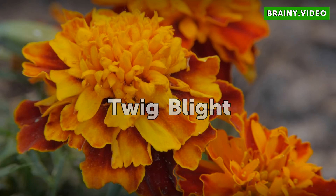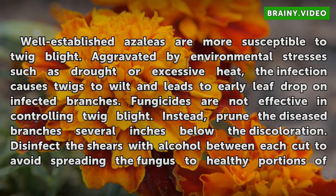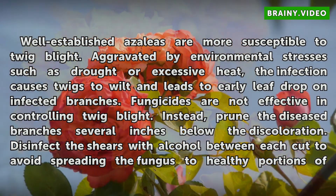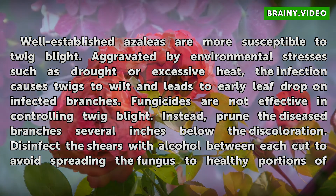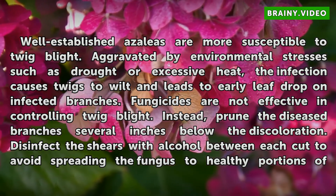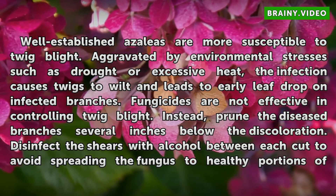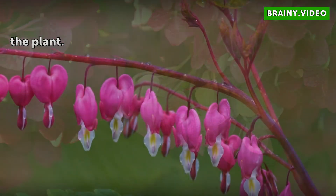Twig blight. Well-established azaleas are more susceptible to twig blight. Aggravated by environmental stresses such as drought or excessive heat, the infection causes twigs to wilt and leads to early leaf drop on infected branches. Fungicides are not effective in controlling twig blight. Instead, prune the diseased branches several inches below the discoloration. Disinfect the shears with alcohol between each cut to avoid spreading the fungus to healthy portions of the plant.